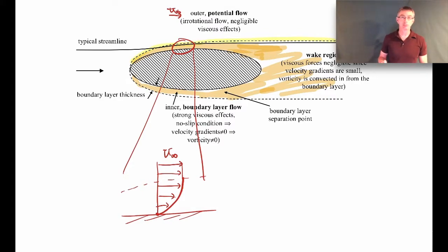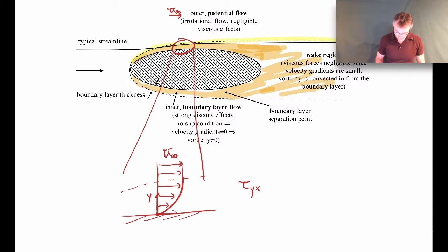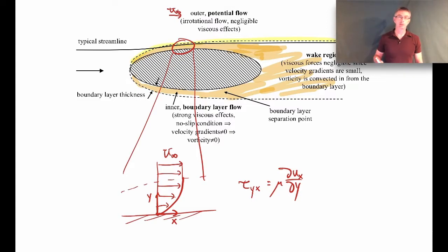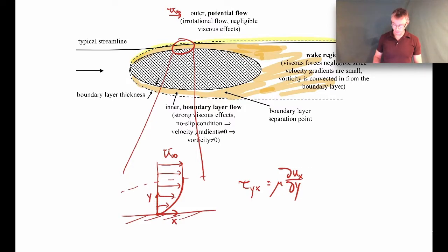This region where most velocity change occurs is what we call the boundary layer. In terms of viscous stresses, recall that the shear stress τ_yx equals the dynamic viscosity μ times du_x/dy, neglecting the smaller du_y/dx term. Within the boundary layer, the velocity is changing rapidly in the y direction, so du_x/dy is large, giving a large velocity gradient and therefore large shear stresses inside the boundary layer.